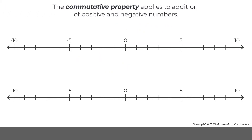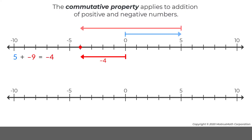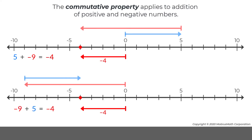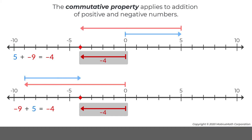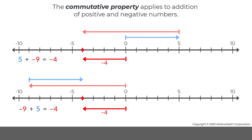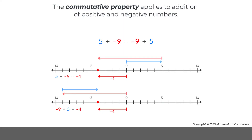The commutative property applies to addition of positive and negative numbers. For example, the calculation 5 plus negative 9 is represented on the top number line, and negative 9 plus 5 is represented on the bottom number line. Notice that the order of the arrows for 5 and negative 9 does not affect the sum, which is negative 4 for both. So the order of adding positive and negative numbers does not change the sum.